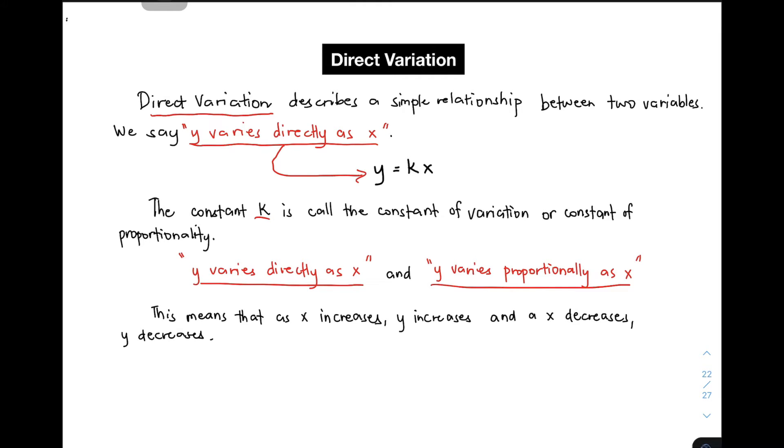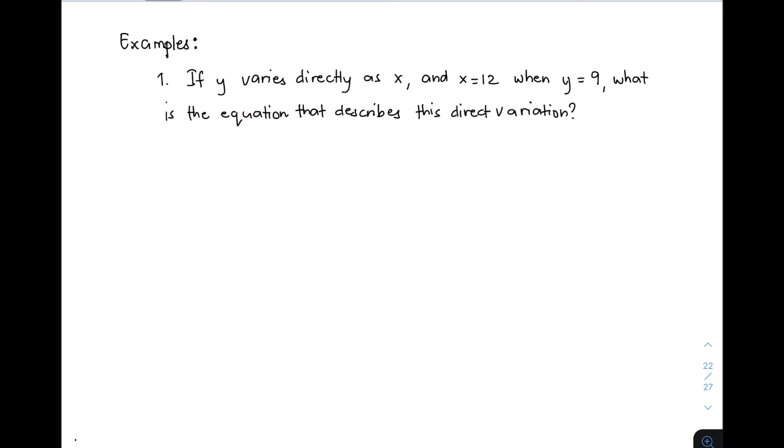Next, I will show you different word problems you will encounter when dealing with direct variation. For the first example: Y varies directly as X, and X is equal to 12 when Y is equal to 9. What is the equation that describes this direct variation? We are asked to find the equation.